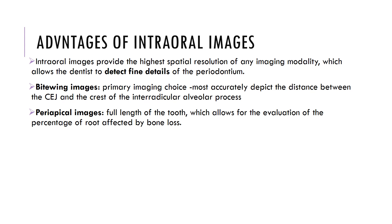Bitewing images are the primary imaging choice, mostly because they accurately depict the distance between the CEJ and the crest of the interdental interradicular alveolar process. Periapical images are useful when you want to see the full length of the tooth, allowing for evaluation of the percentage of the root affected by bone loss.